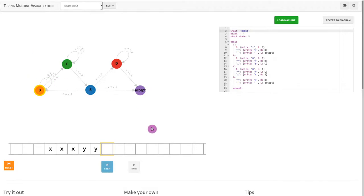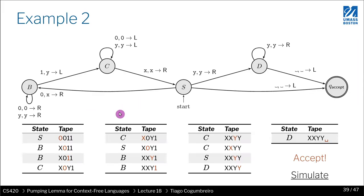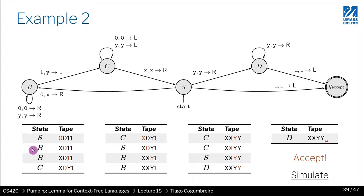What you see in the configuration is the state and the tape memory. Since you have that, you have everything needed to advance because the Turing machine is deterministic — by knowing where we are and which state we are in, we can advance.